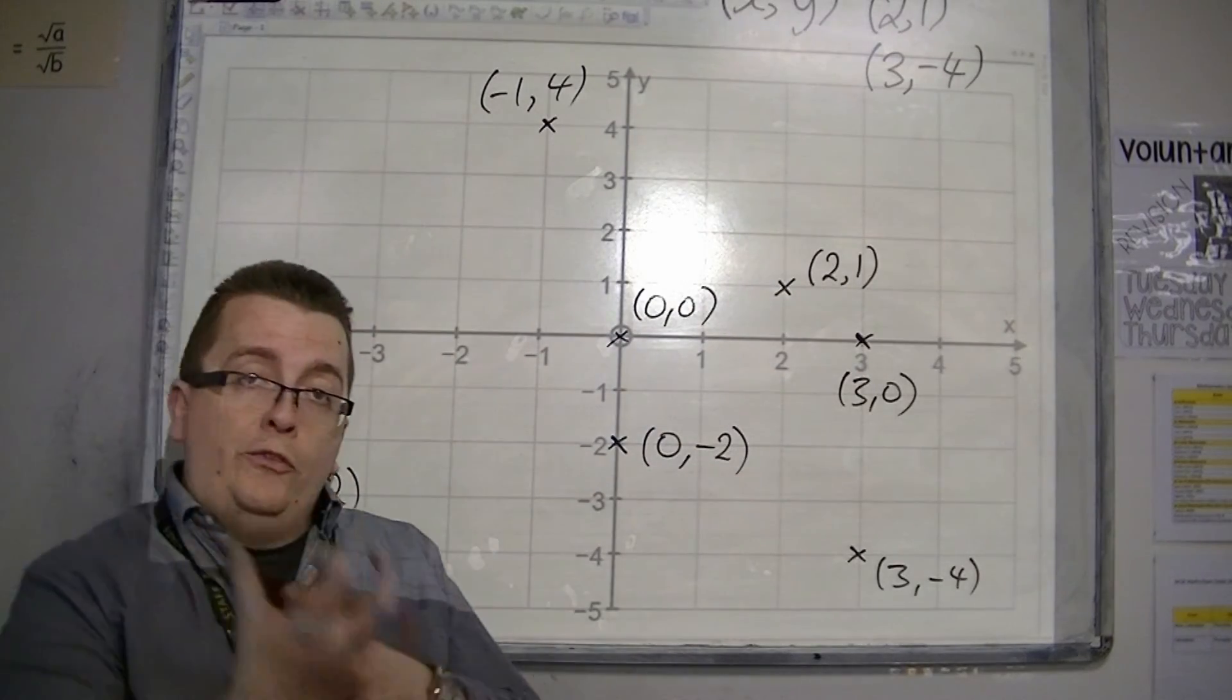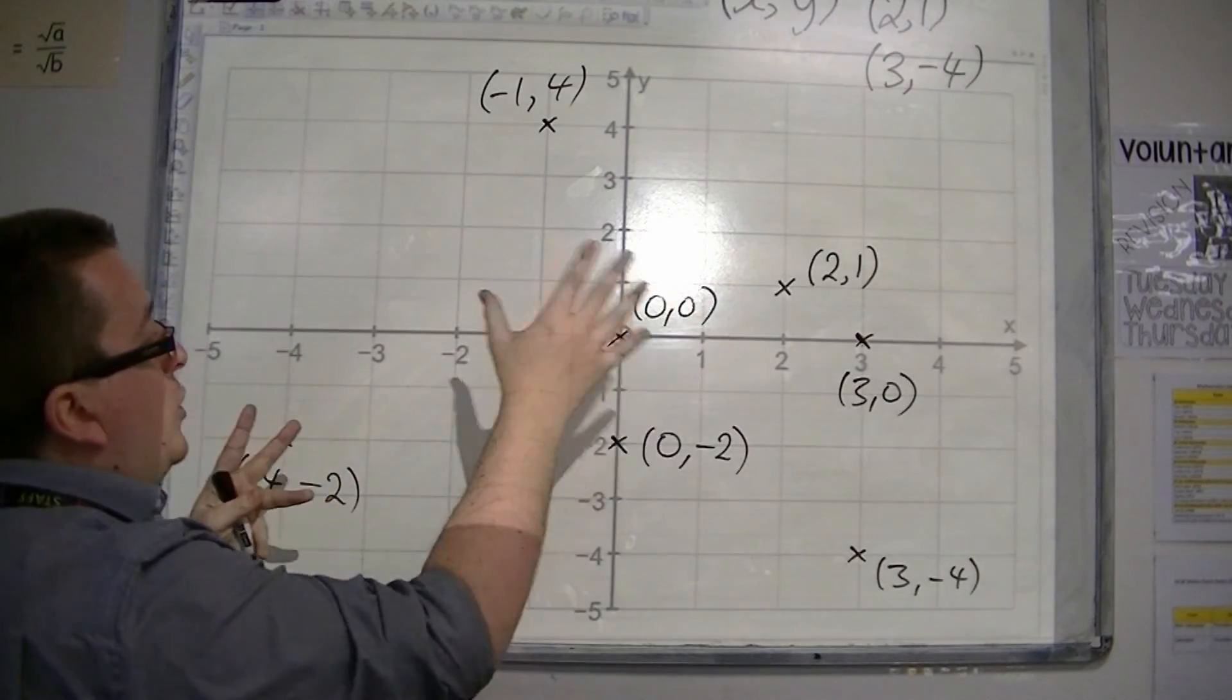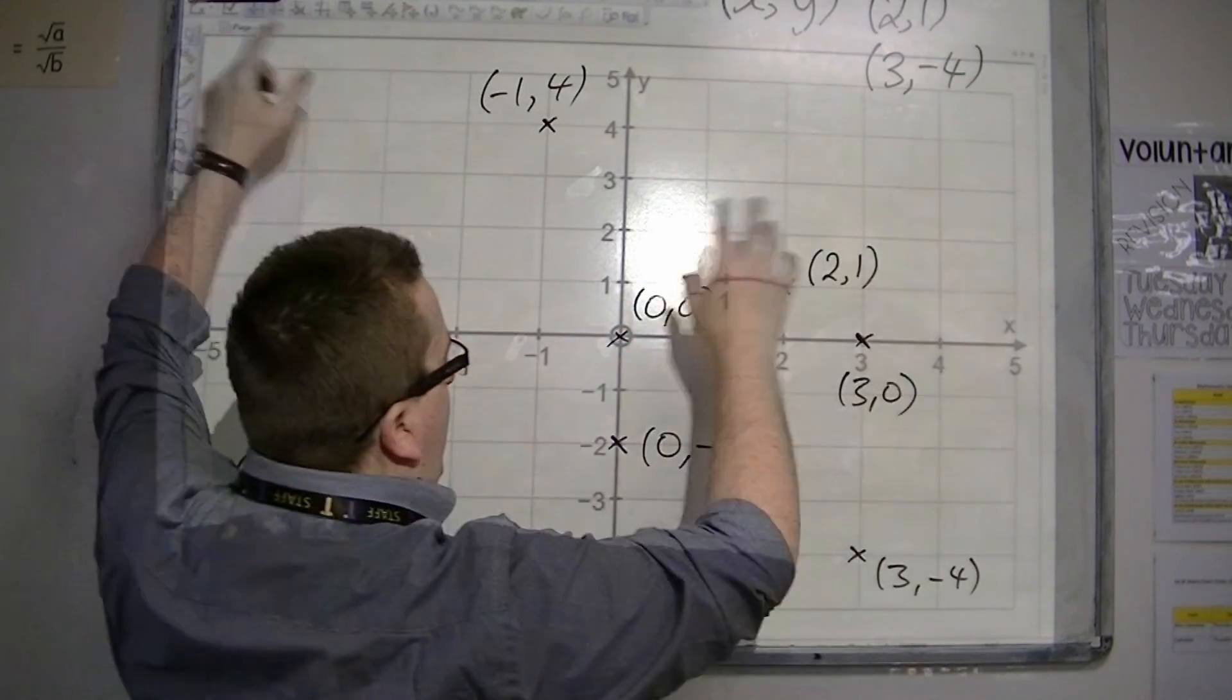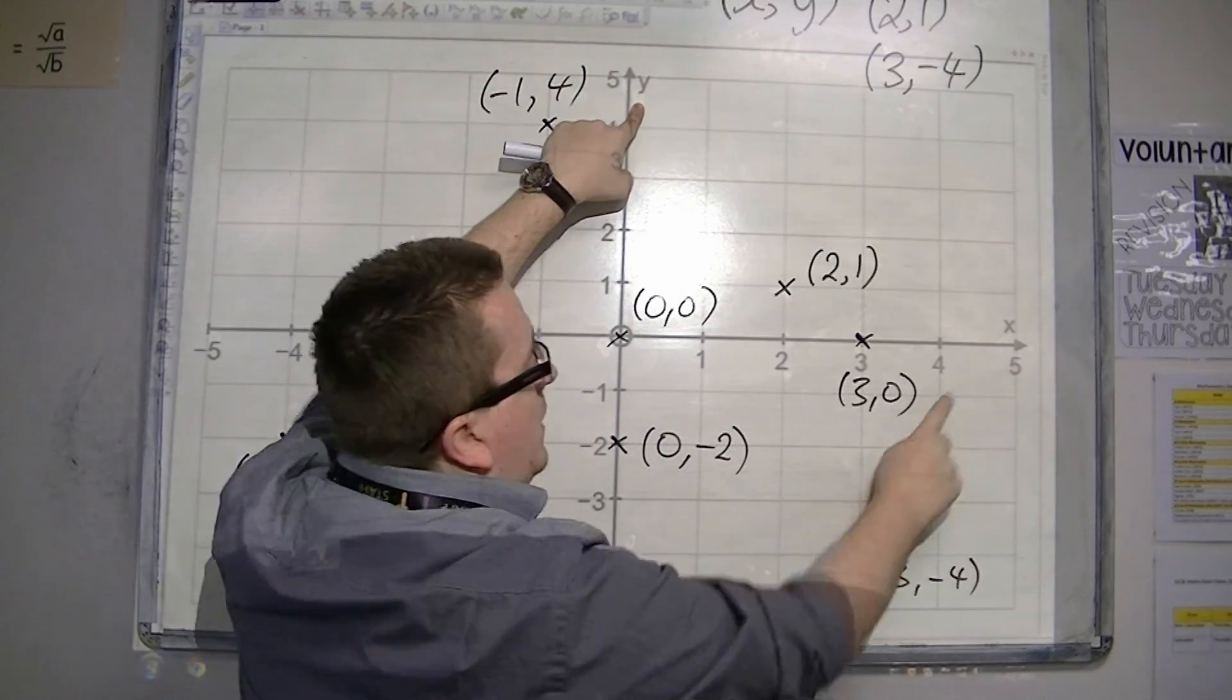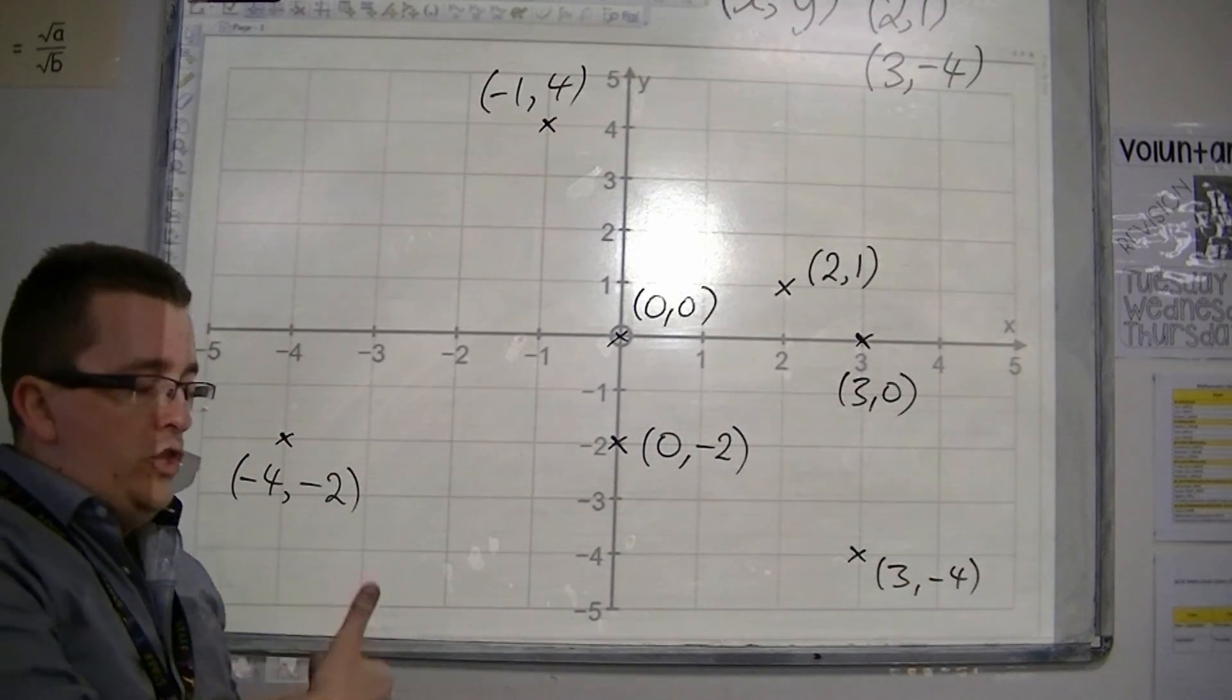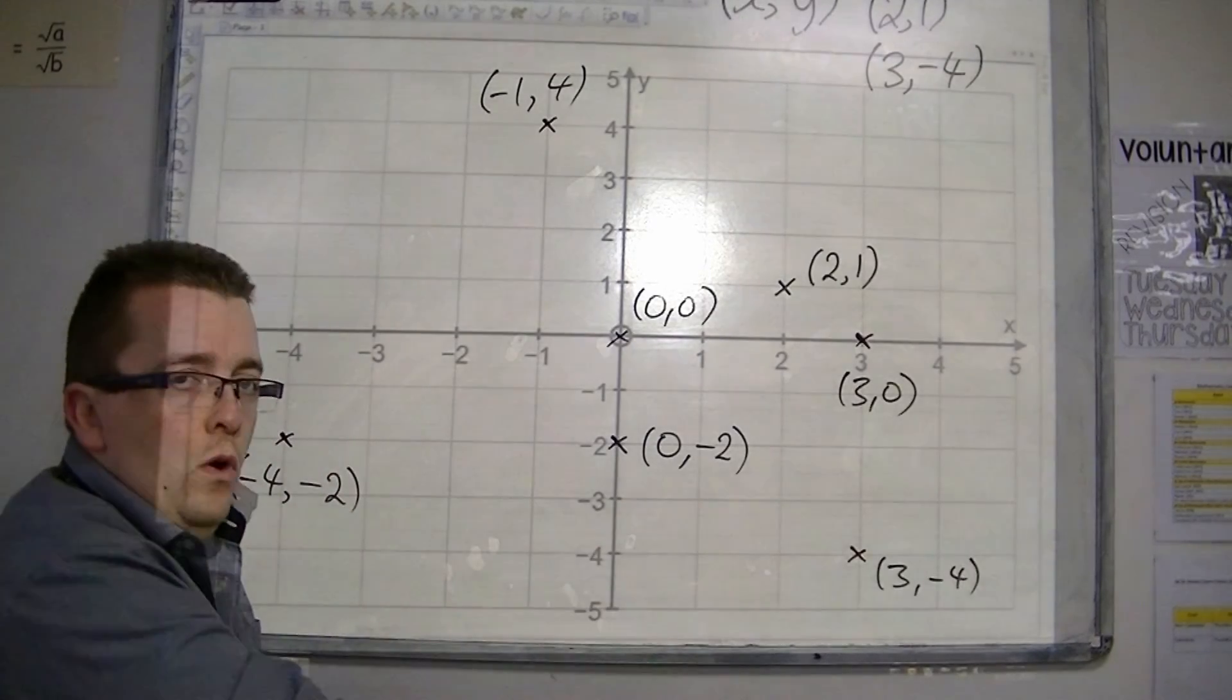So in most cases, the axis will be labeled with the x and the y, as they are here. And just remember that when you're actually writing the coordinates, they need to be alphabetical. So x, then y.